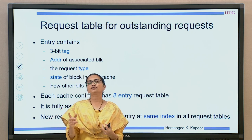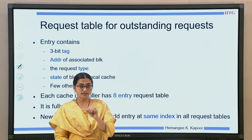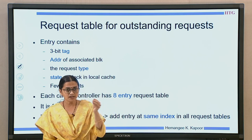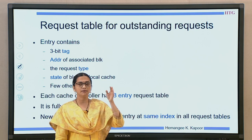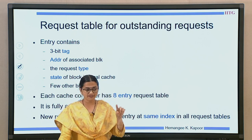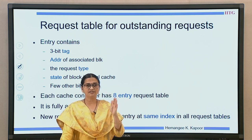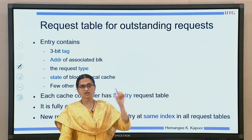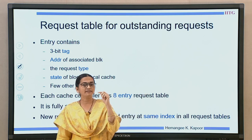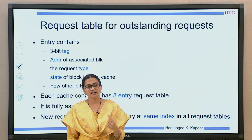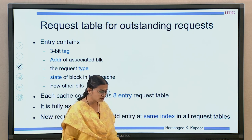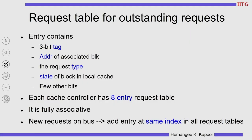Three things, then the state of the block in the local cache — that is, not the requester but all the processor nodes. Whenever they see this request, they will keep track of whether they have this block or not. That information, and of course the sender — who is the originator of this request. All this information is stored in one location incorporating one request, and we have probably 8 such pending requests in the request table.